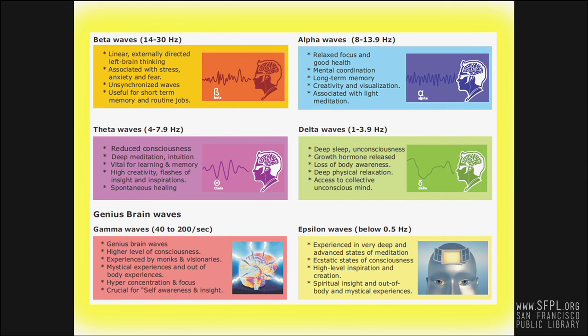Delta waves are produced when we're actually unconscious or asleep. Frequencies here range between 1 and 4 hertz. In addition to deep regenerative sleep, this state is a key contributor to immune system function and a person's overall physical health.